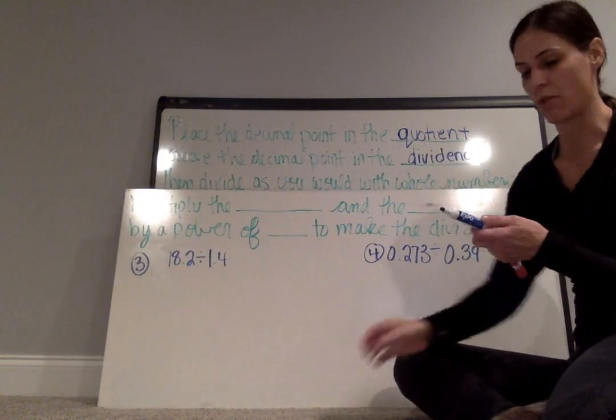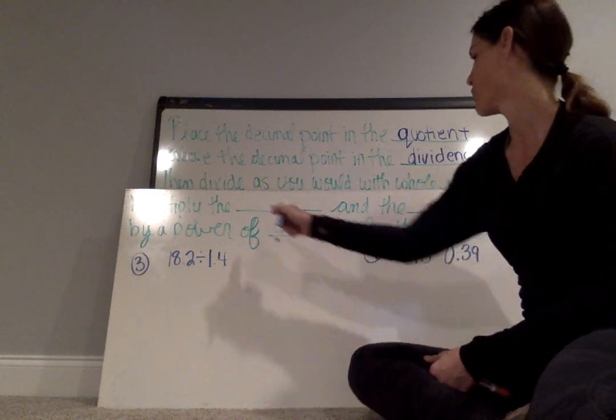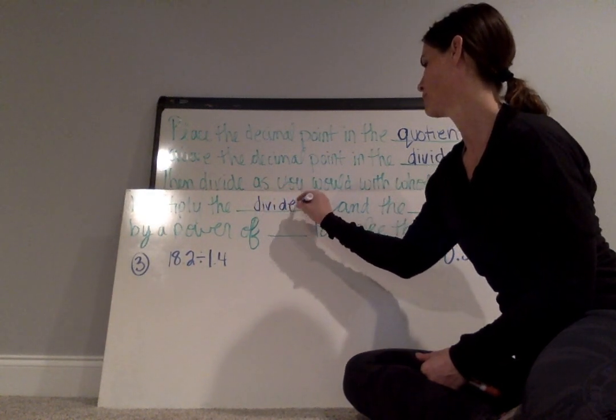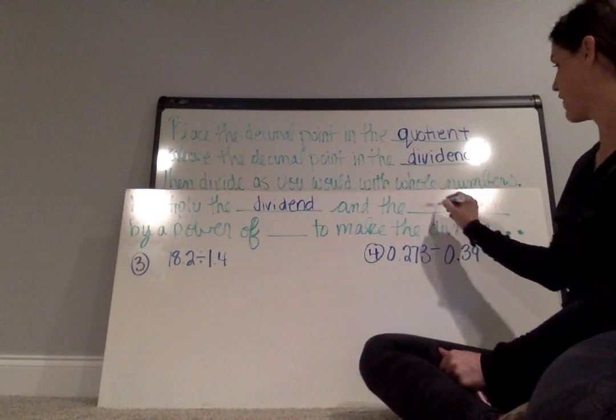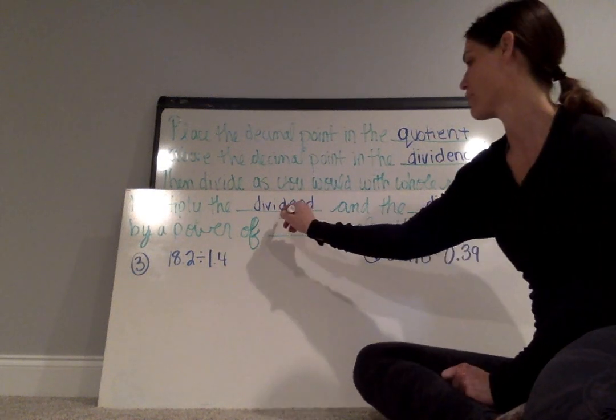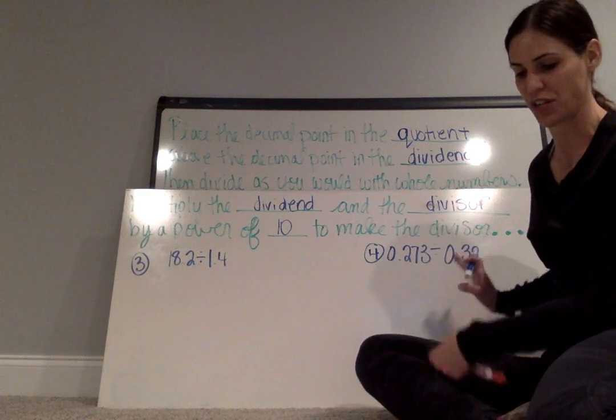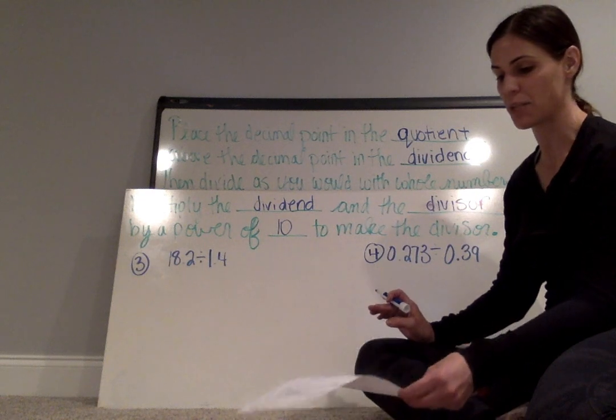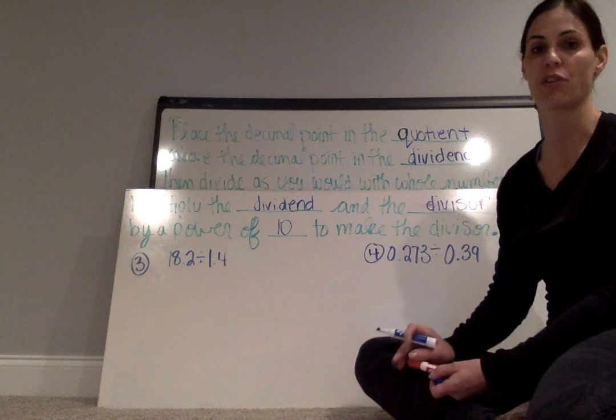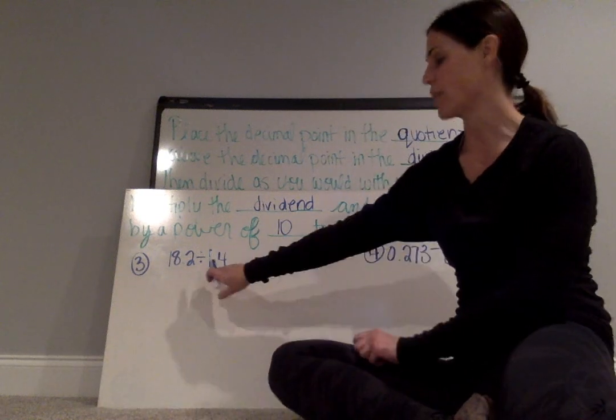Now we are going to take a look at when we have decimals in the dividend and the divisor. For this, you are going to multiply the dividend and the divisor by a power of 10 to make the divisor a whole number. You will then place the decimal point in the quotient and divide as you would with whole numbers. Continue until there is no remainder.